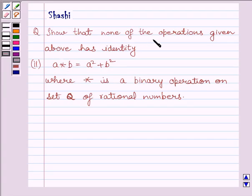The question is: show that none of the operations given above has identity. The second part given above is a star b equals a square plus b square, where star is a binary operation on set Q of rational numbers.